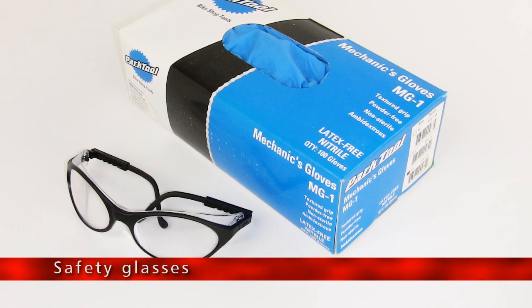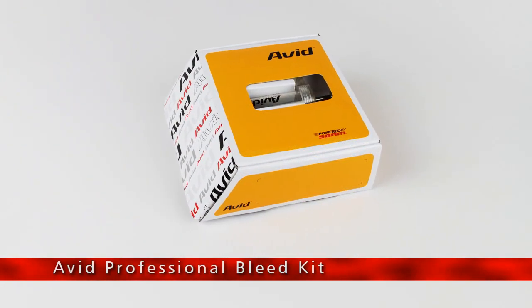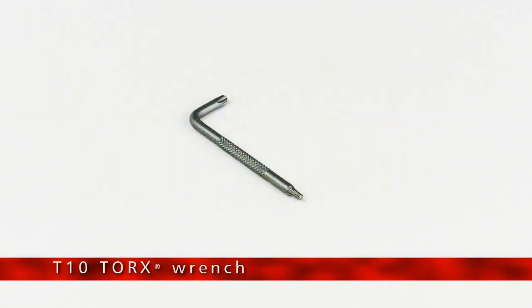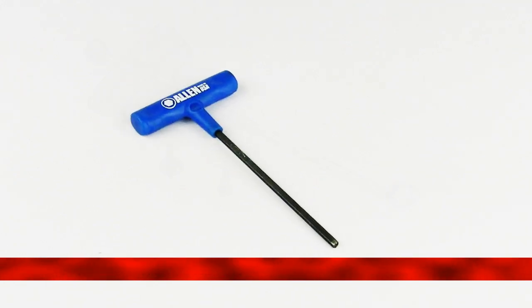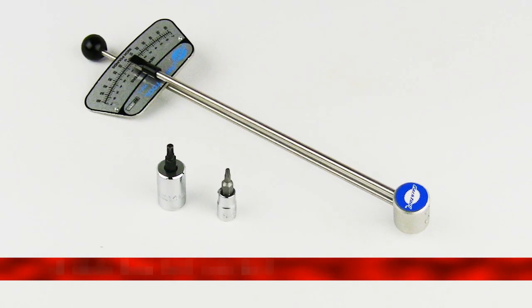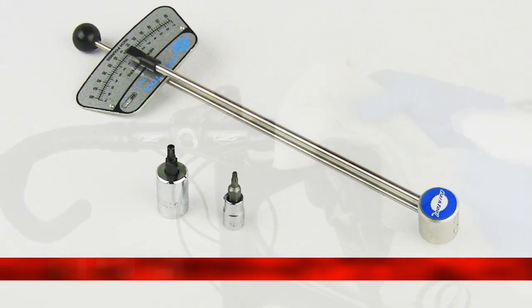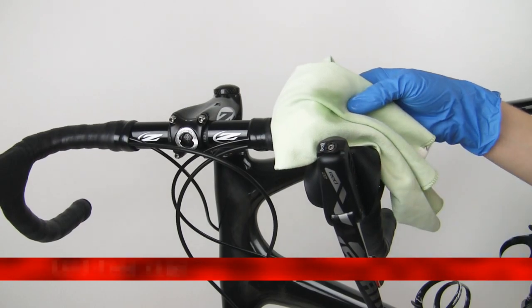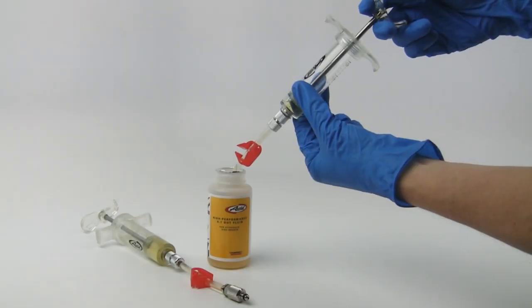You will need the following tools and supplies: Safety Glasses, Nitrile Gloves, Avid Bleed Kit or Avid Professional Bleed Kit, T10 Torx Wrench, 4mm Hex Wrench, Torque Wrench, 4mm Hex Bit Socket, 5mm Hex Wrench, clean lint-free rags, 6mm Hex Wrench, and 7mm Hex Wrench.